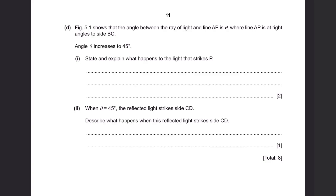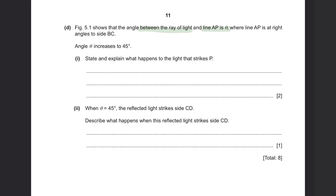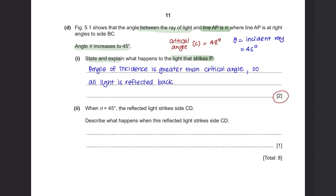Question D: Figure 5.1 shows that the angle between the ray of light and line AP is theta. Theta increases to 45 degrees. Part 1: State and explain what happens to the light that strikes P. We know the angle of incidence theta is 45 degrees, and from the previous part, the critical angle is 42 degrees. When the angle of incidence is greater than the critical angle, all the light is reflected back into the glass due to total internal reflection.